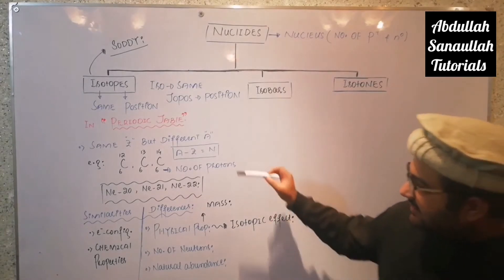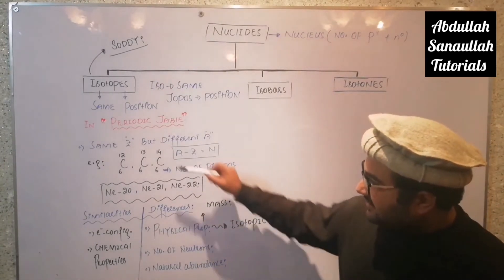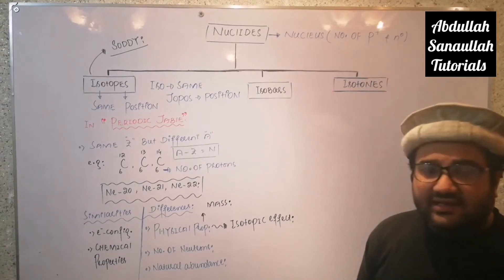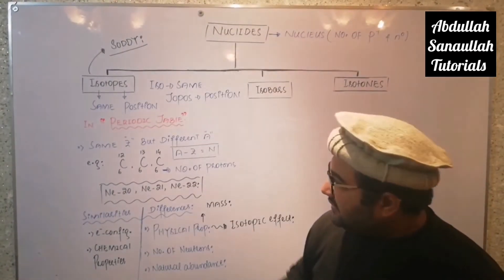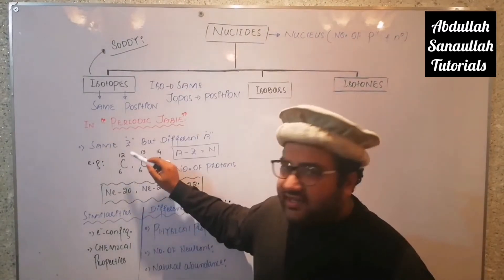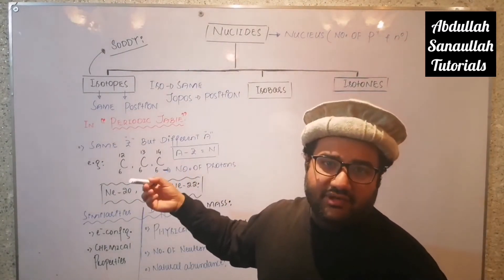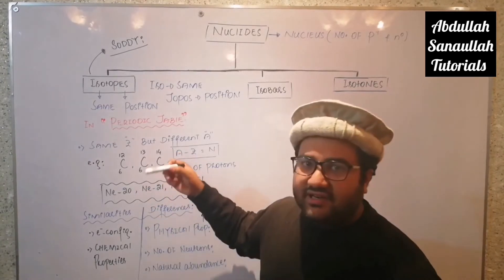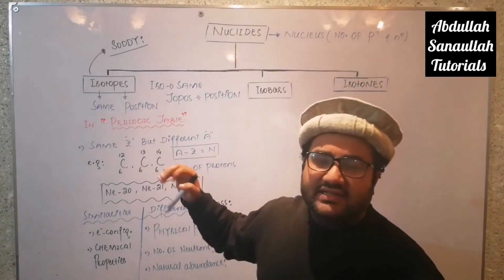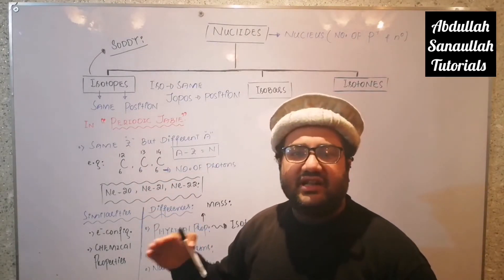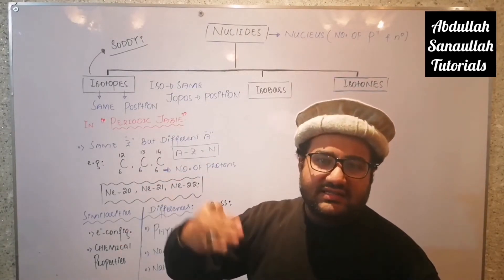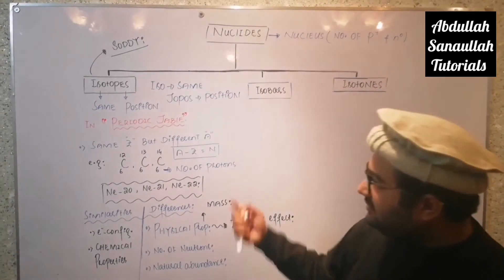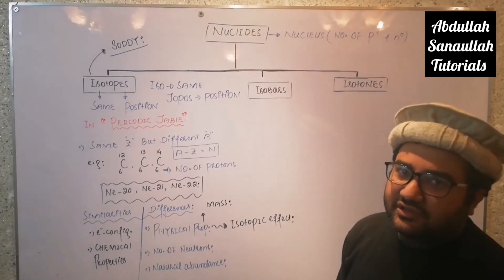The second difference between isotopes is the number of neutrons, as already calculated. The third difference is in natural abundance. For example, carbon-12 is almost 98.8% abundant in nature, carbon-13 is very low, and carbon-14 is even lower. This percentage of each isotope that occurs naturally is called its natural abundance, and the natural abundance of isotopes is different from each other.